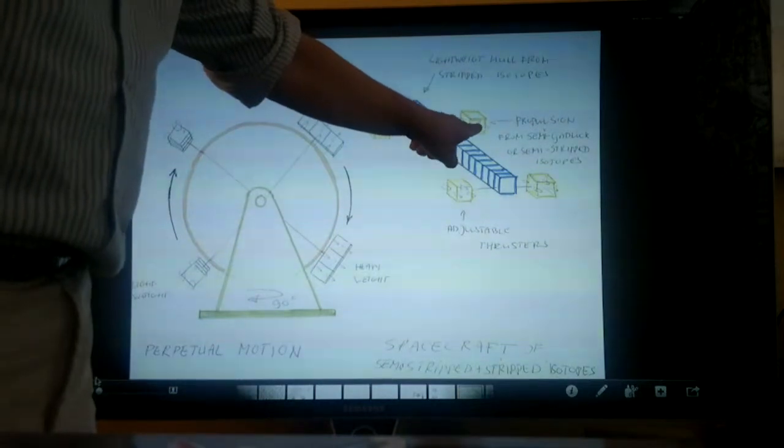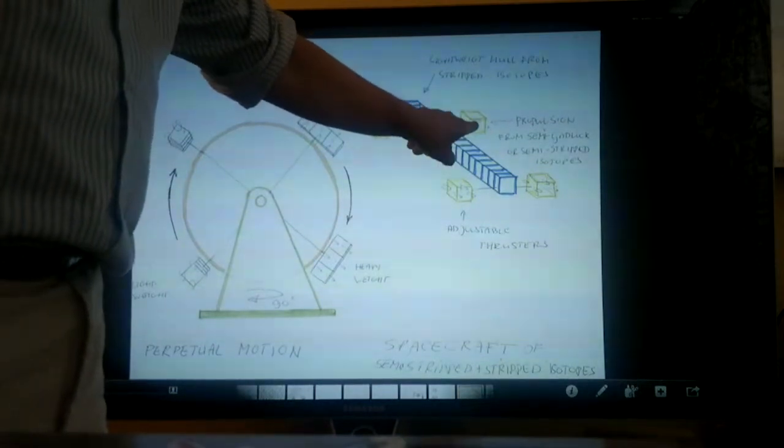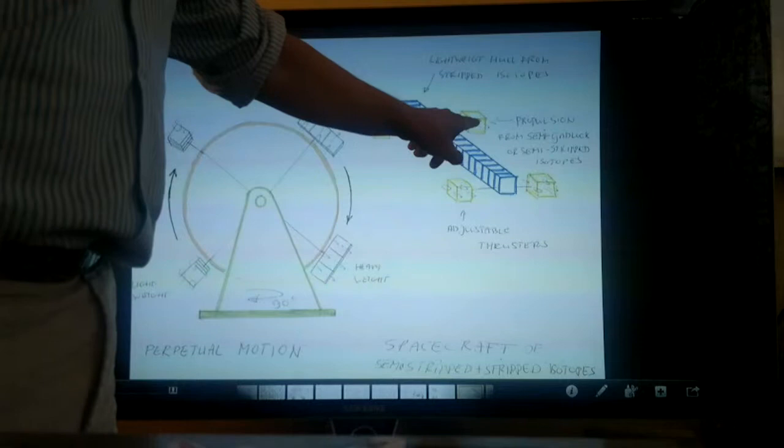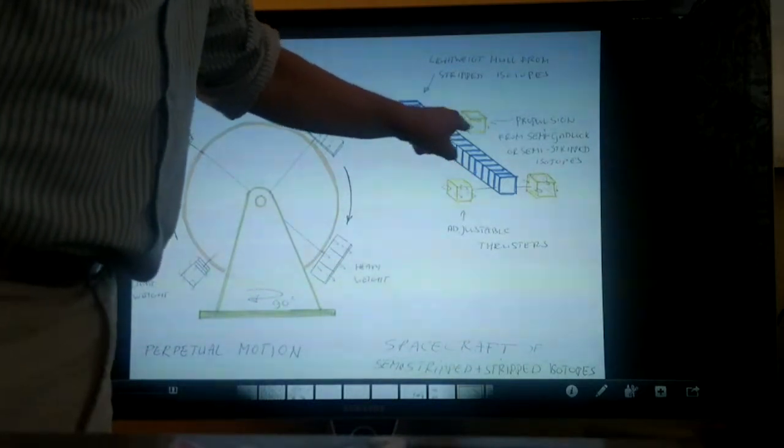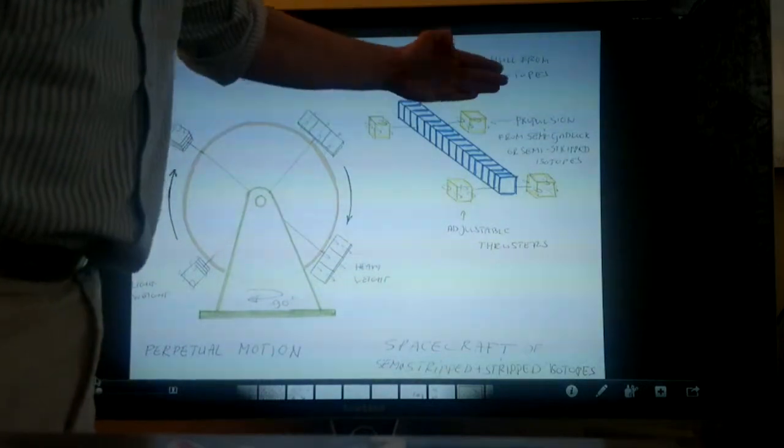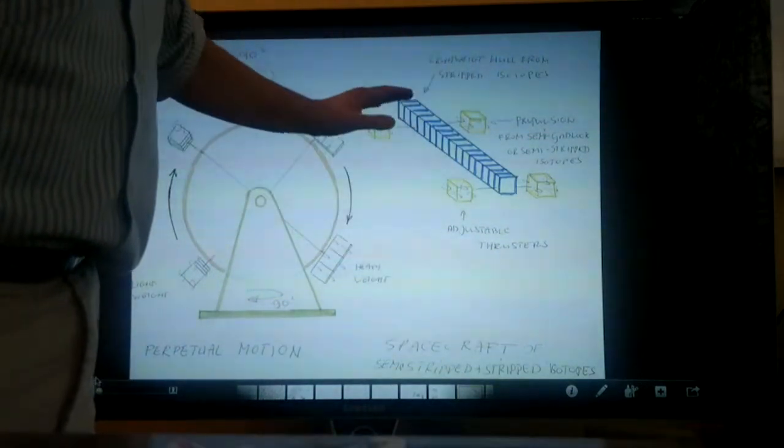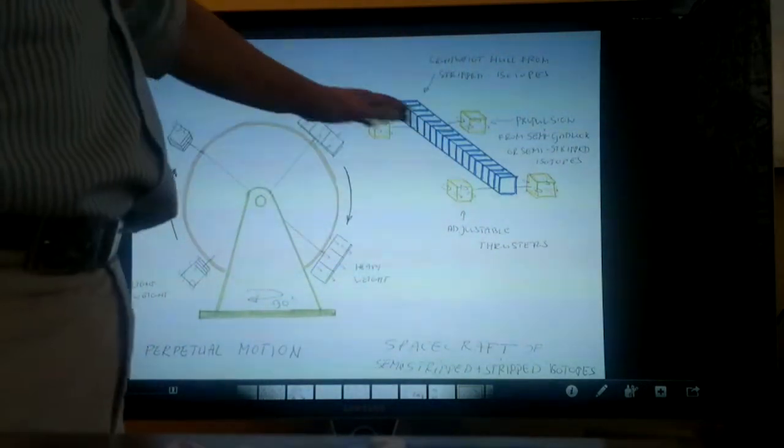This is propulsion. It can be semi-gridlocked or semi-stripped. As long as the rotating varions are in the same direction, you can use it to steer a ship through space.